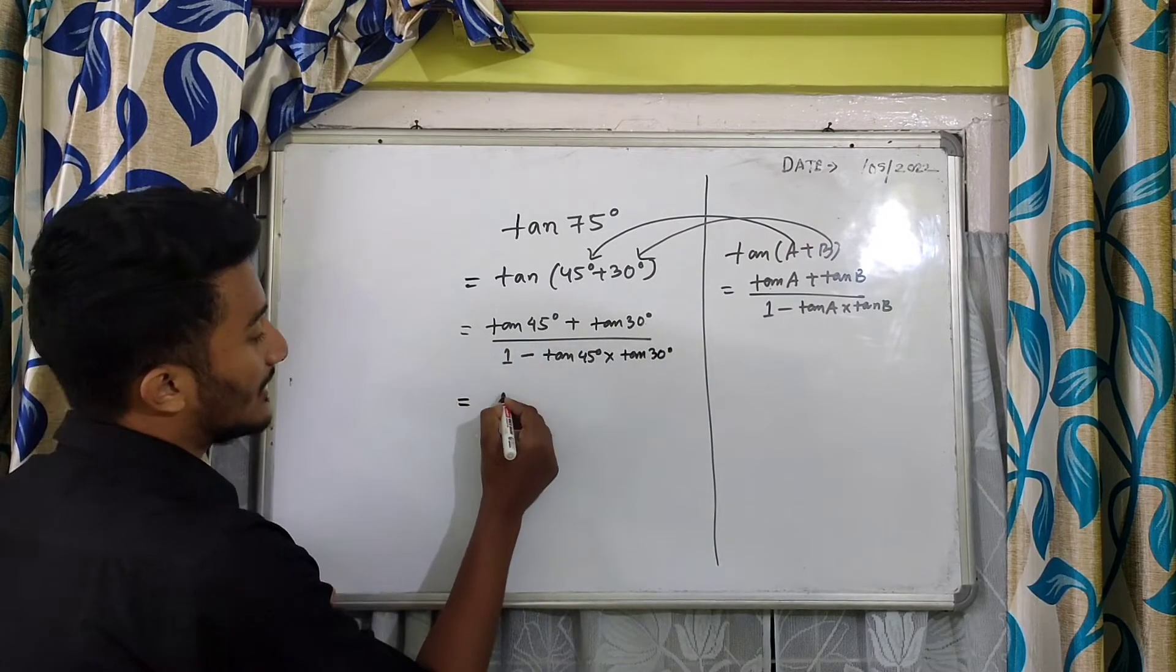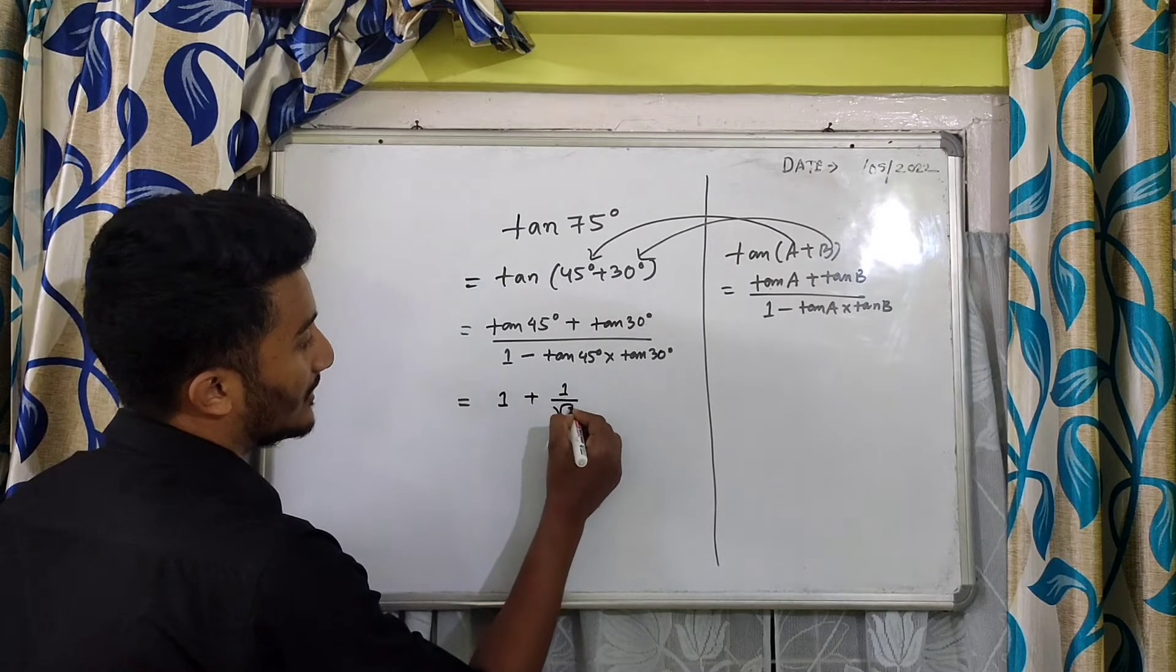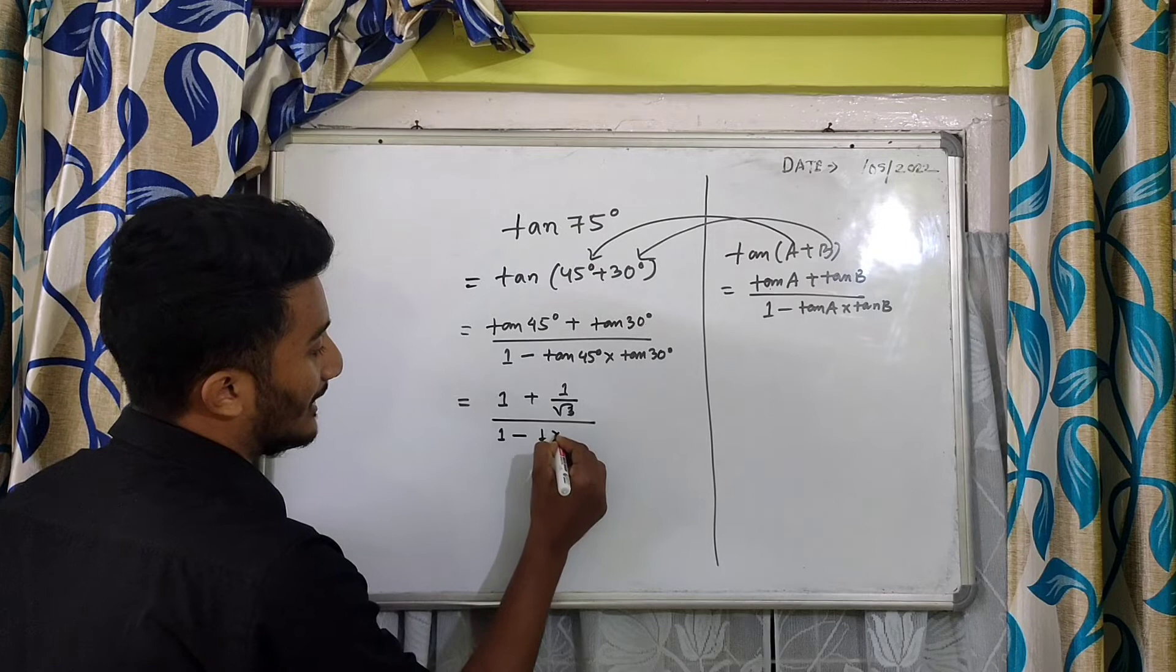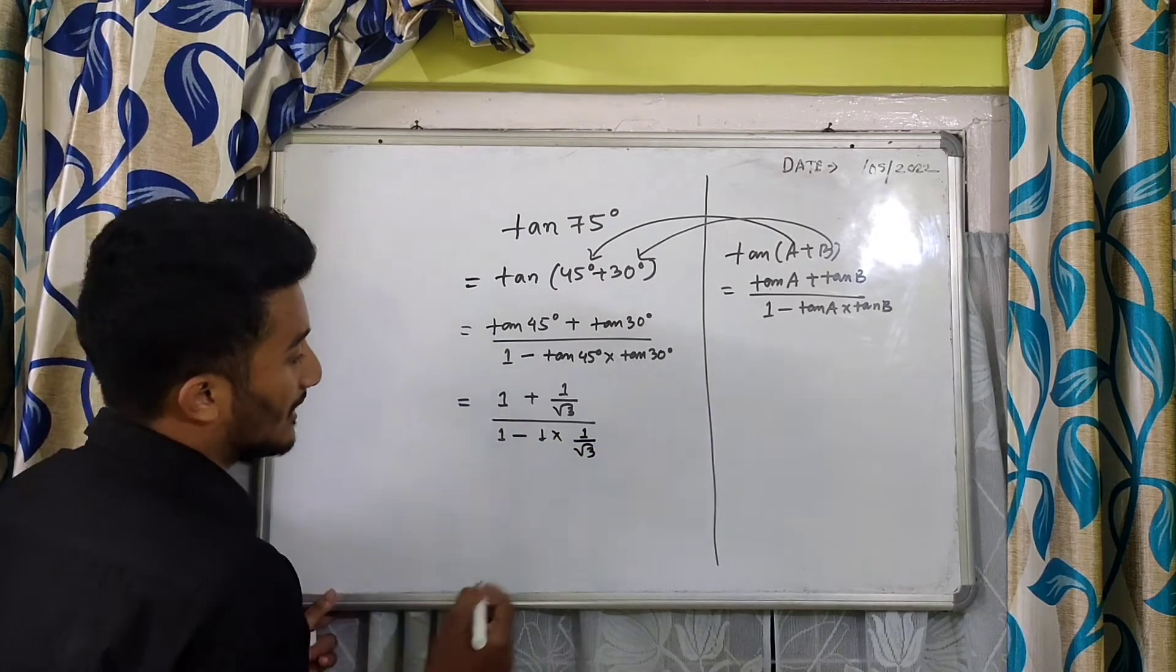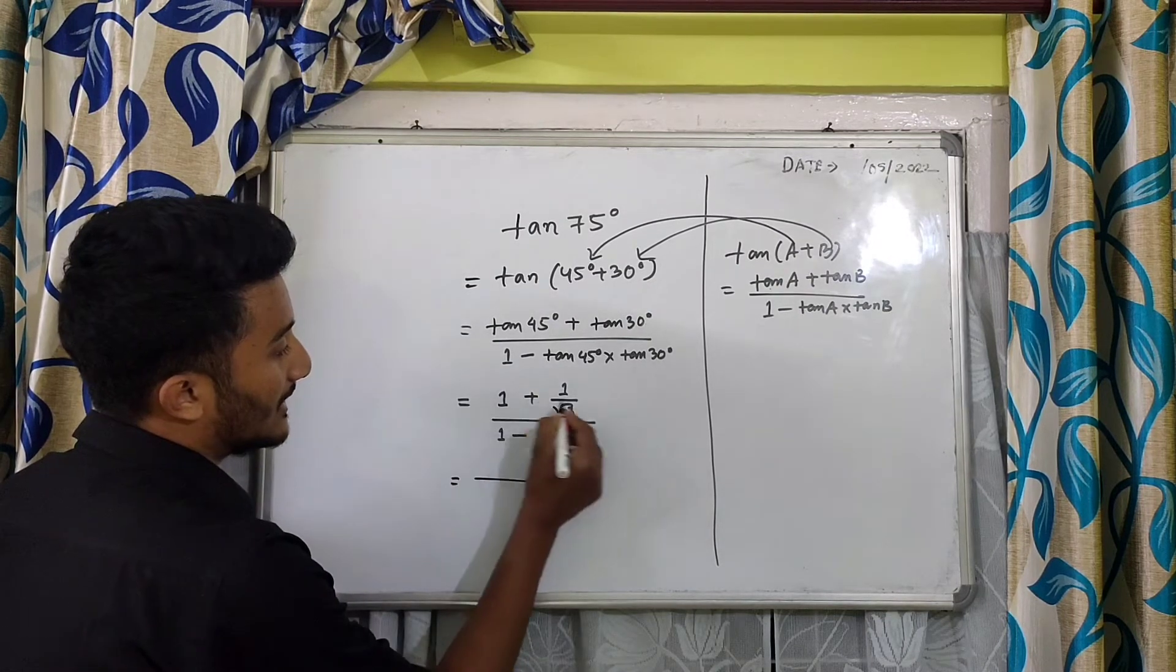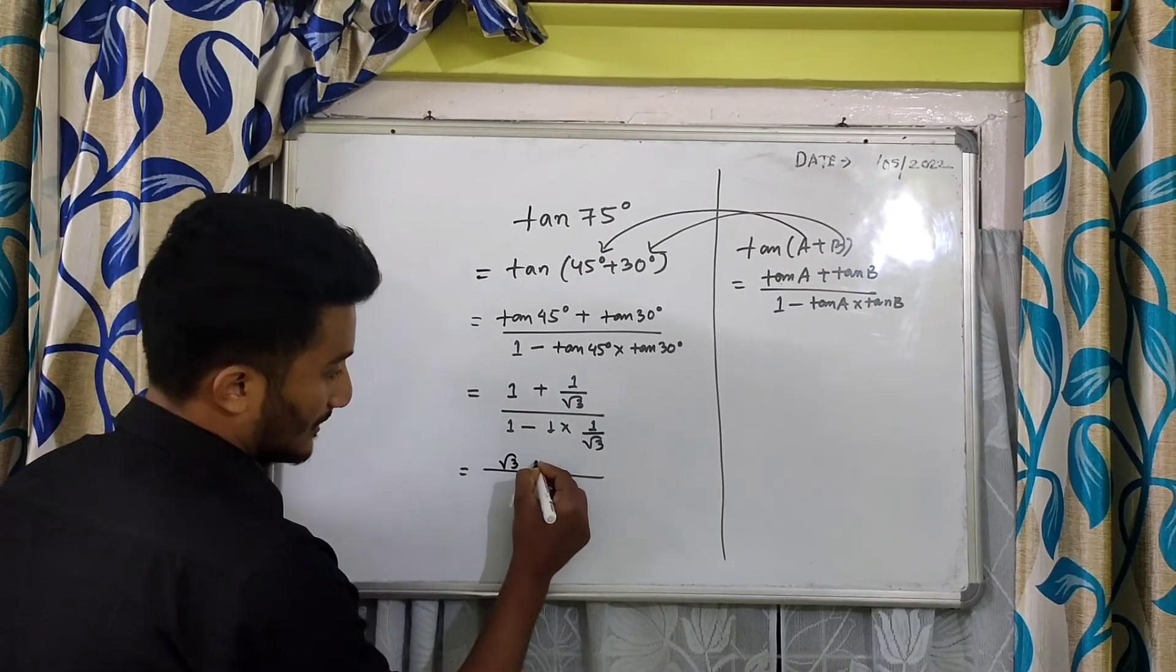So now we can put down the values. Tan 45 degrees is 1, plus tan 30 degrees is 1 by root 3. In the similar way, it will be 1 minus 1 into 1 by root 3. So now we can take the LCM of it. The LCM of this would be root 3, so after that we will solve it.